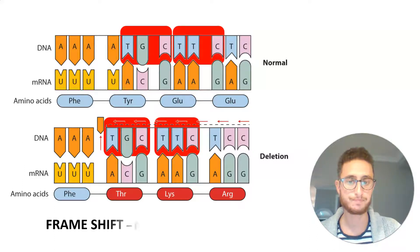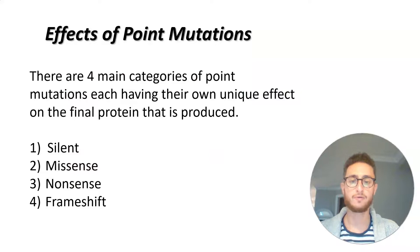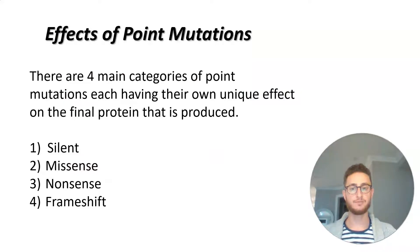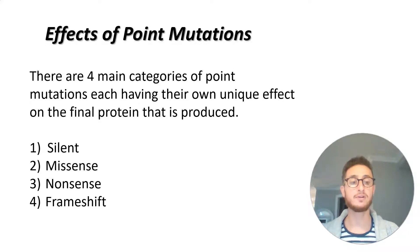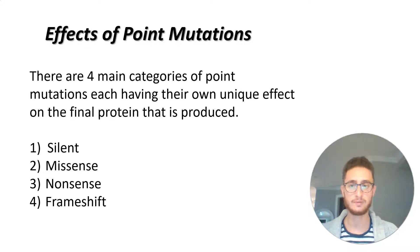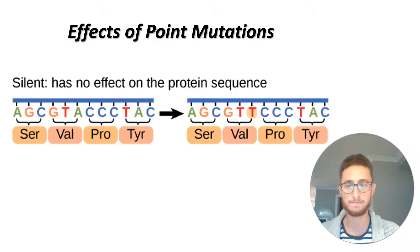So there are four main categories of point mutations: silent, missense, nonsense, and frameshift. Let's look at what each one of those means individually. These names come from the overall effect of what that mutation does to the final protein.